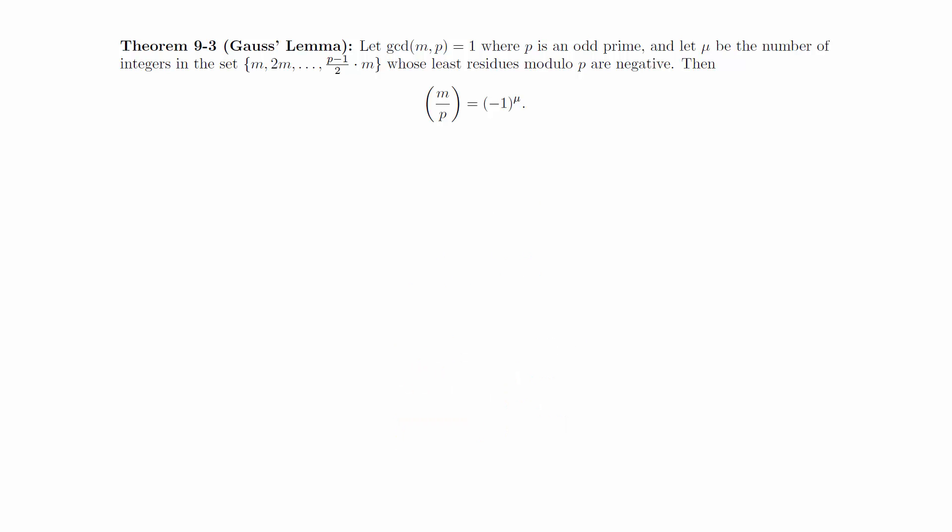Let the gcd of m and p equal 1, where p is an odd prime, and let mu be the number of integers in the set {m, 2m, ..., ((p-1)/2)m} whose least residues modulo p are negative. Then (m/p) is equal to (-1)^mu.